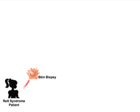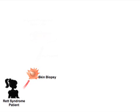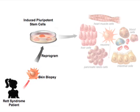To capture the genome of Rett syndrome patients in a pluripotent state, we reprogrammed fibroblasts from patients' skin biopsies. The resultant cells were induced pluripotent stem cells that could give rise to several specialized cell types, including neurons.